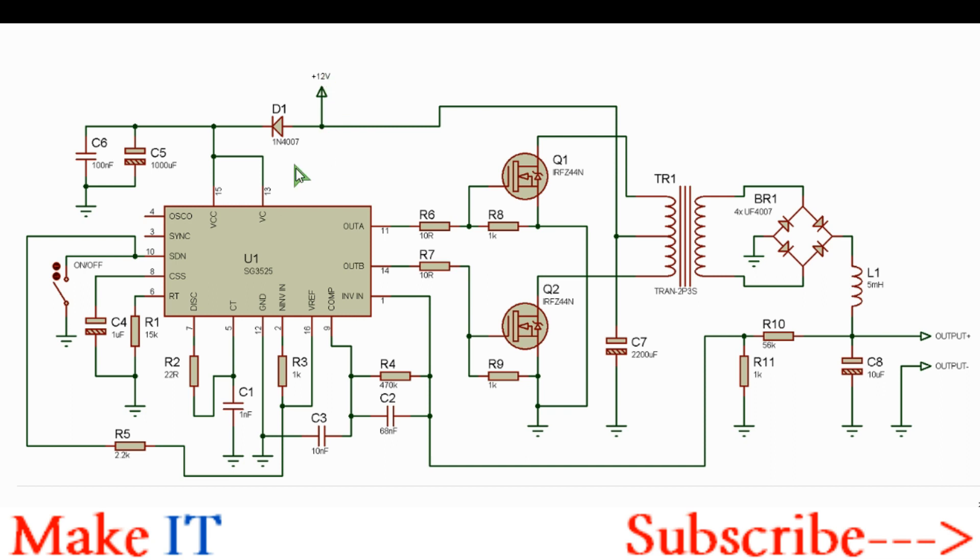At the input you have 12 volts. This is the power supply for the IC. You have this diode, these voltage stabilization capacitors, as well as this noise filtering capacitor C6.